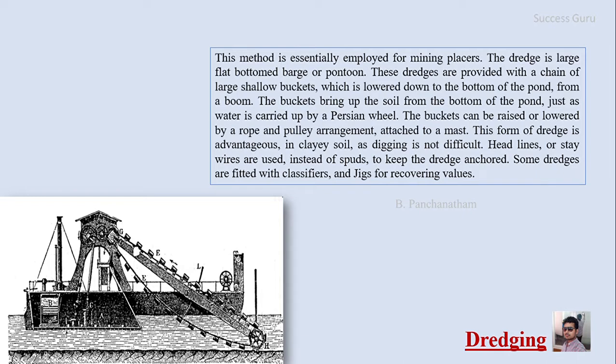The last method is dredging, essentially employed for mining placers. A dredge is a large flat-bottomed barge or pontoon provided with a chain of large shallow buckets, which are lowered to the bottom of the pond from a boom. The buckets bring up soil from the bottom of the pond, similar to how water is carried up by a Persian wheel. Buckets can be raised or lowered by rope and pulley arrangements attached to the mast. This form of dredging is advantageous in clay soil where digging is not difficult. The dredge uses a headline or stay wire instead of a spud to remain anchored. As the bucket wheel brings up sediment with water, it is poured into jigs where heavy valuable metals are separated.